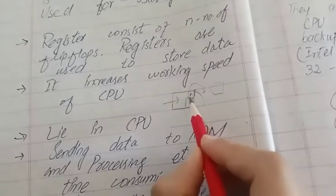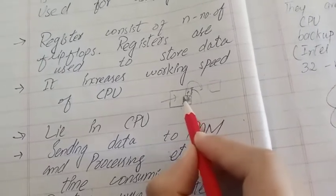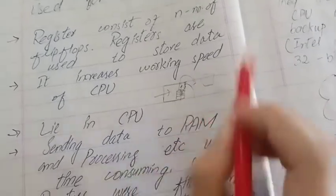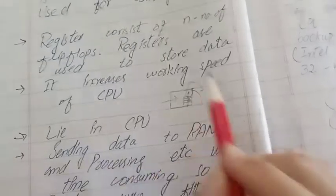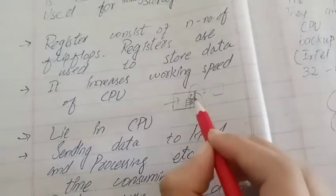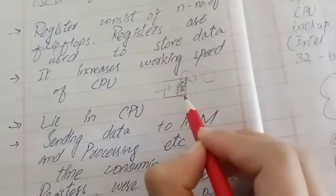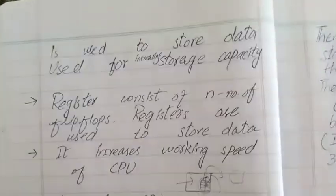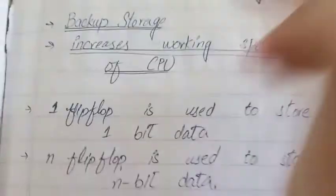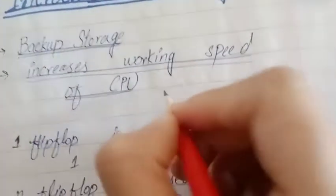This processor inside the CPU temporarily stores the data. If you have registers inside the processor, the working speed will be very fast and the data will be very easy to manage. This acts as backup storage and increases working speed of CPU.